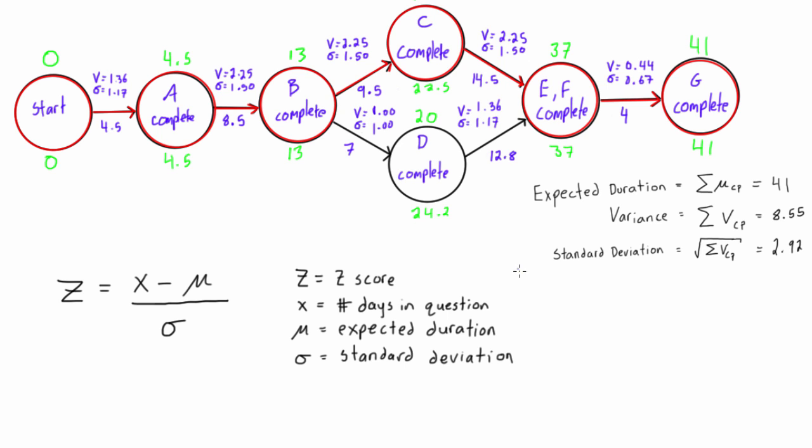All right, welcome back. In this video we are learning how to estimate a project completion date with at least a 95% confidence level. So that's a little bit different than the problems we've been doing before where we're given a project end date and asked to find what the probability is of that happening.